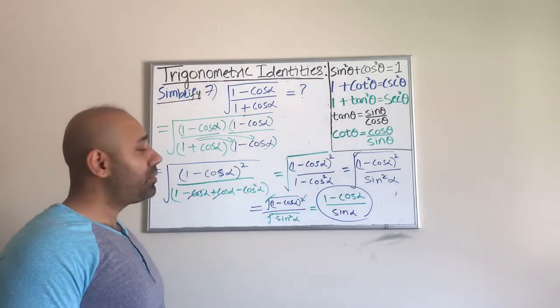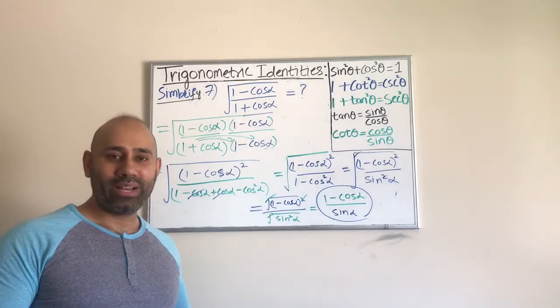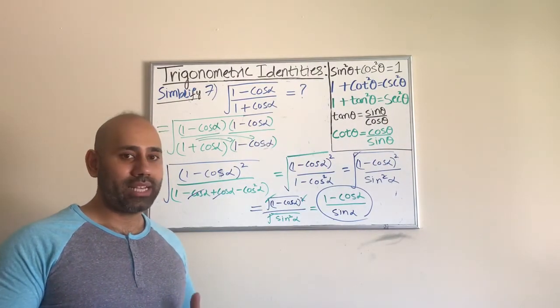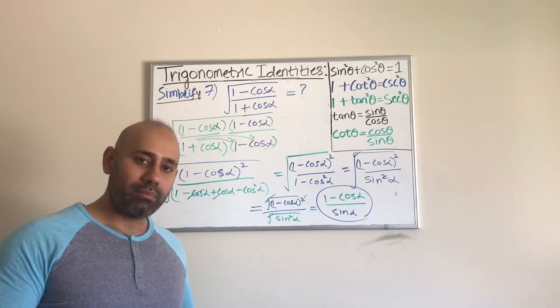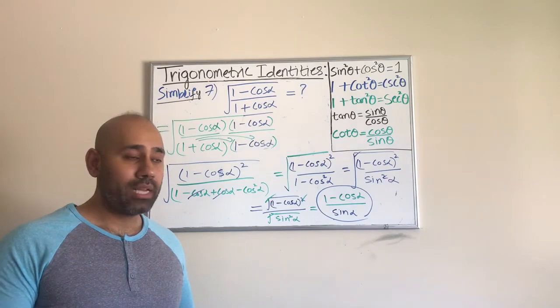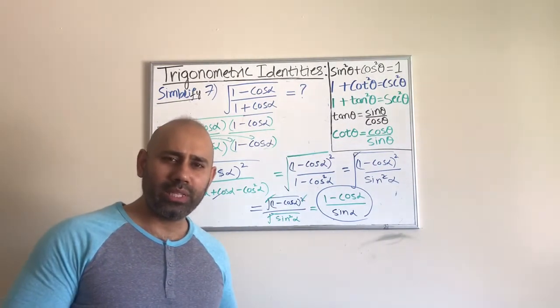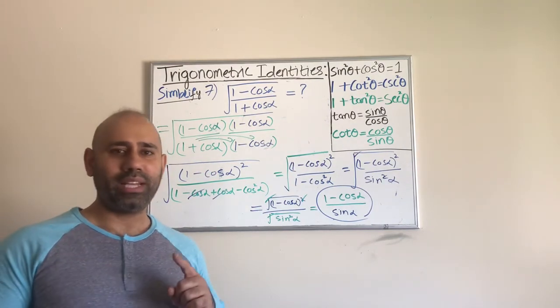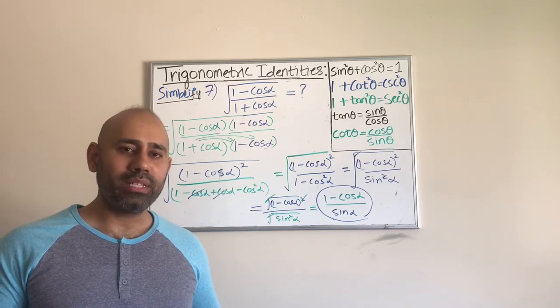That is number seven, guys. We did one through seven. Yes, all of these have something different to them. They are not exactly the same from number one to number seven, but that is the reason why I chose all these numbers, so that you can see many different types.